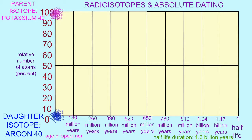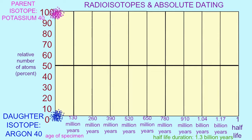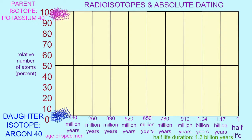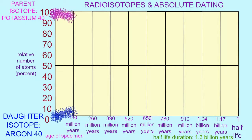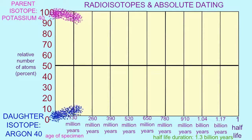Volcanic ash possesses the radioactive form of potassium, radioisotope potassium-40, and no argon because this gas escapes as lava solidifies to form rock.